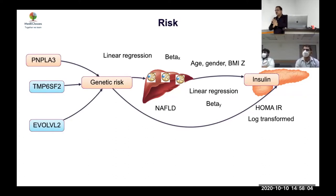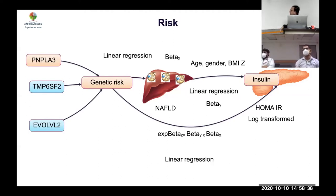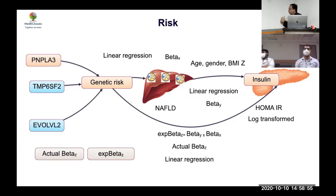If the route from A to B to C and the direct route from A to C are equal, it means that B — the fatty liver — is the mechanism. Multiplying beta X by beta Y gives the expected beta Z. If the actual regression of genetic risk on insulin resistance matches this expected value, it confirms that the liver mediates the genetic effect on insulin resistance. This is the core principle of Mendelian randomization.